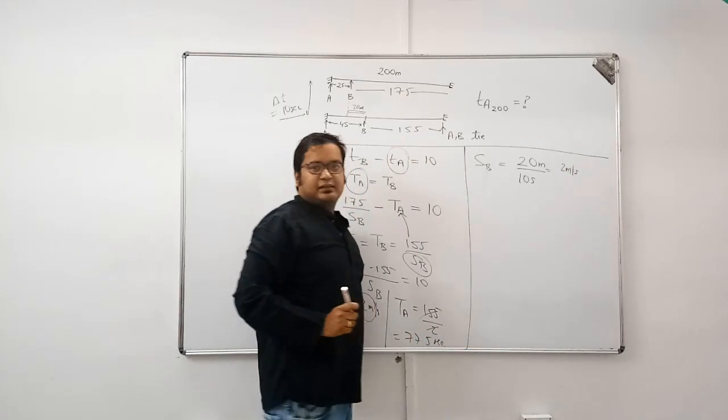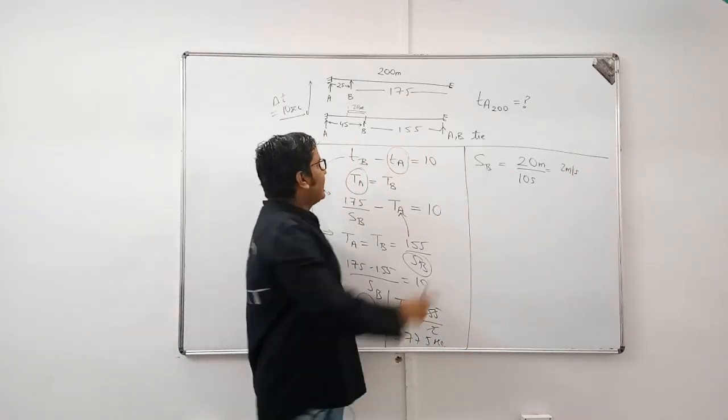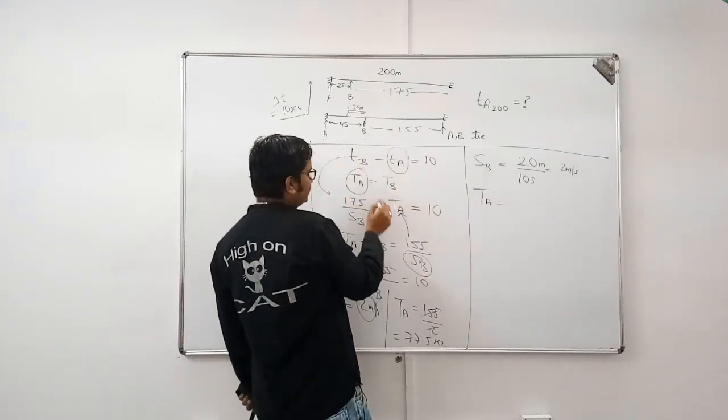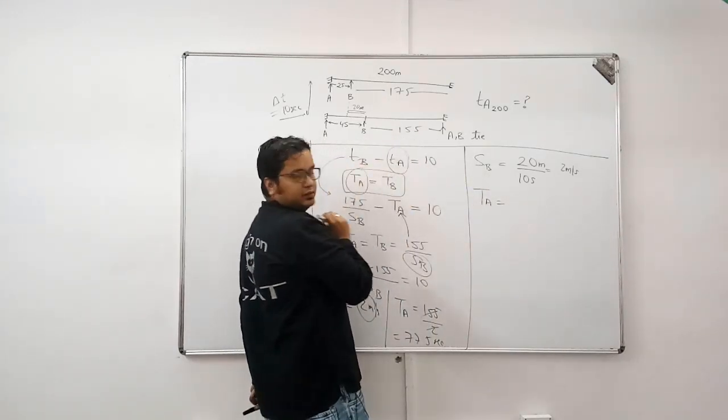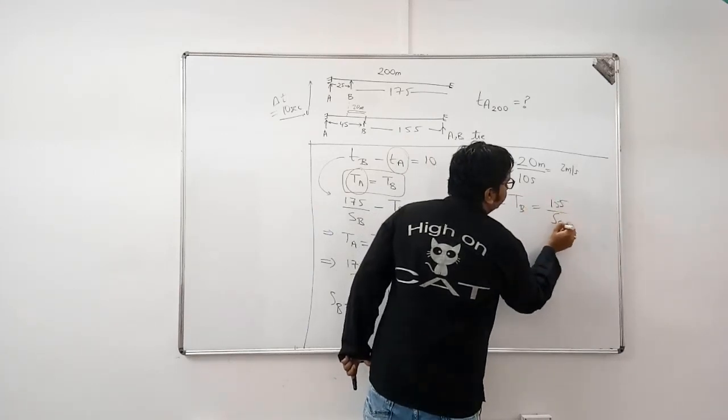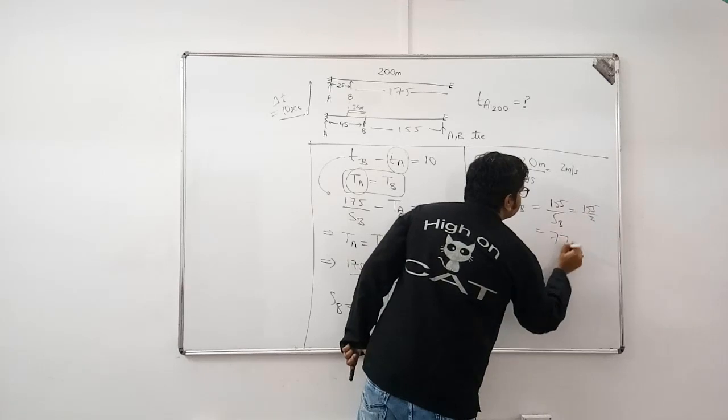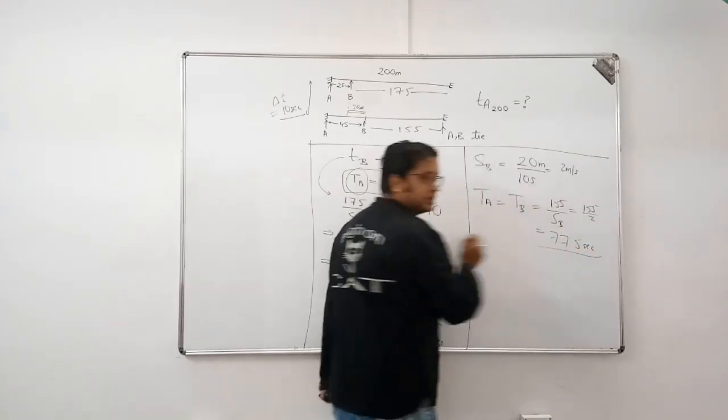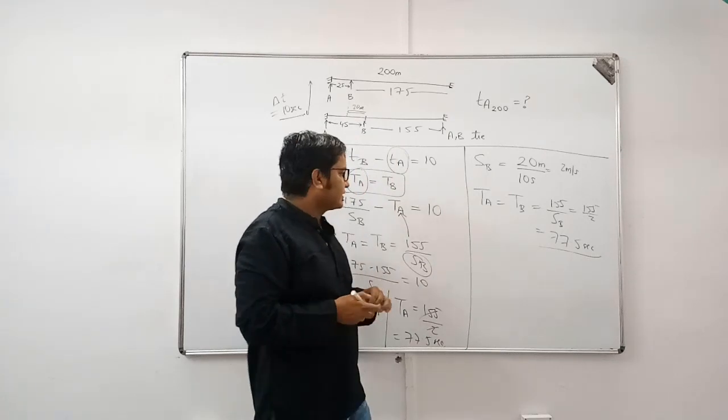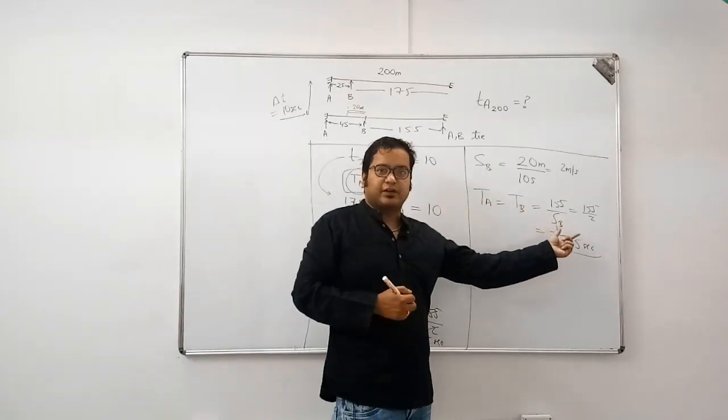So, in this case, this becomes the first equation. And now, you have to find time taken by A, which in the second case, we use this equation directly. TA is equal to 155 by speed of B. So, that becomes 77.5 seconds.